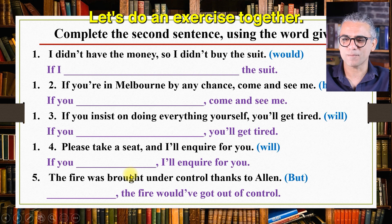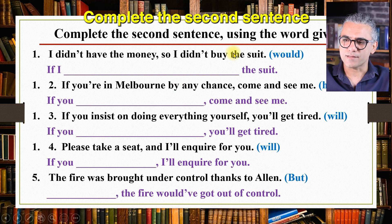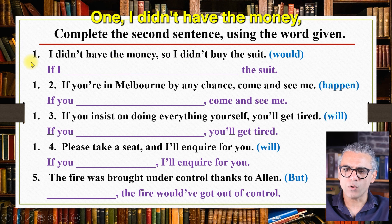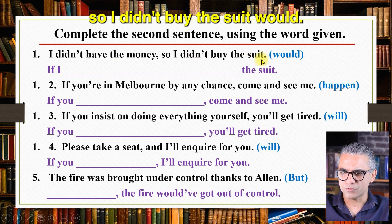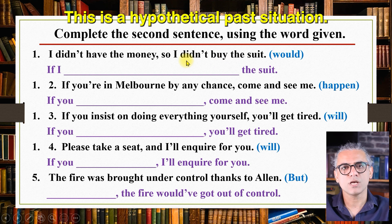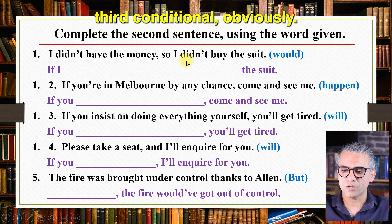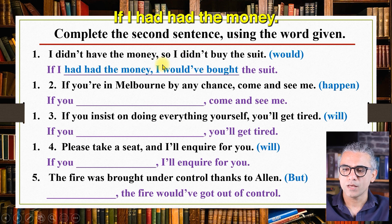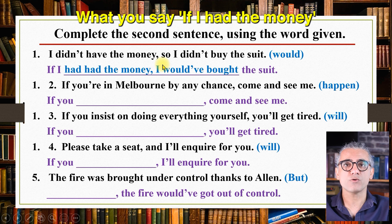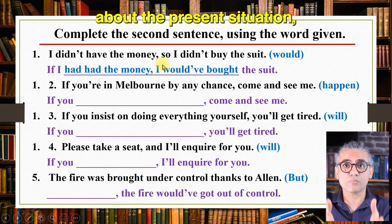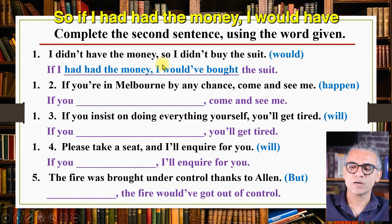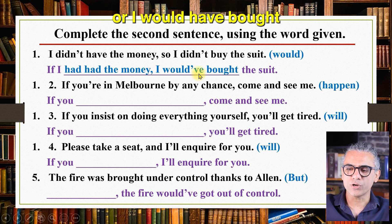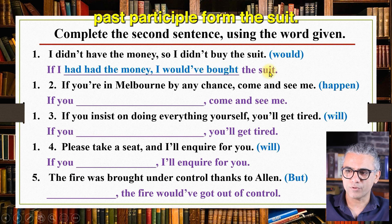Let's do an exercise together. Complete the second sentence using the word given. Number one: I didn't have the money, so I didn't buy the suit. Word: would. This is a hypothetical past situation, so we need third conditional: if I had had the money, I would have bought the suit — 'bought' in past participle form. Number two: if you're in Melbourne by any chance, come and see me. Word: happen. Answer: if you happen to be in Melbourne, come and see me — another first conditional.